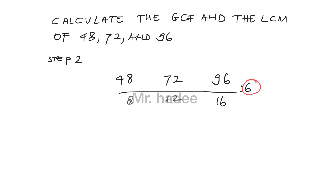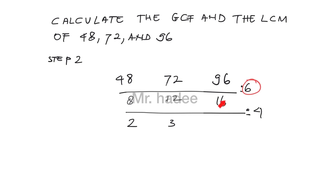Now choose a number that can divide 8, 12, and 16. Choose 4. 8 divided by 4 equals 2. 12 divided by 4 equals 3. 16 divided by 4 equals 4. Since 4 can divide 8, 12, and 16, circle that number.